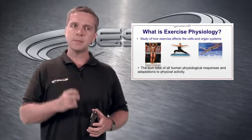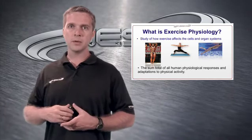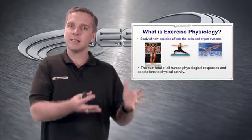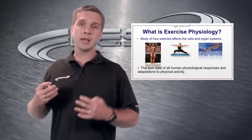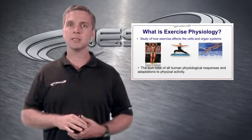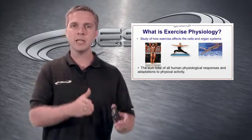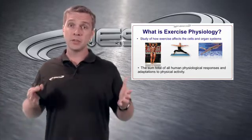Exercise physiology is the study of how exercise affects the cells and organ systems of the body. If we look at the bodybuilder, he most likely has the most lean body mass — the most muscle. The yoga instructor most likely is the most flexible, and the swimmer most likely has the greatest aerobic capacity, or the best cardiovascular endurance. Their bodies have individually adapted to the exercise stress placed upon them. It's the sum total of all human physiological responses and adaptations to physical activity.